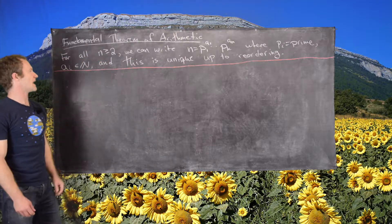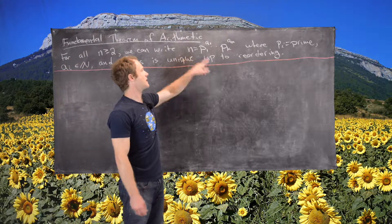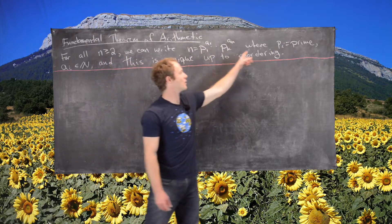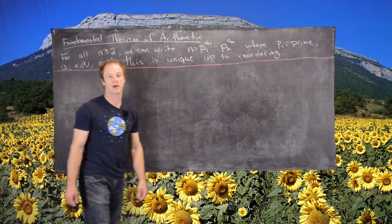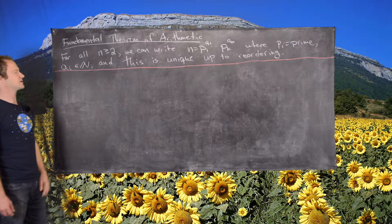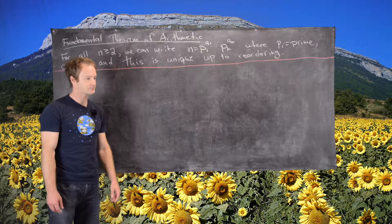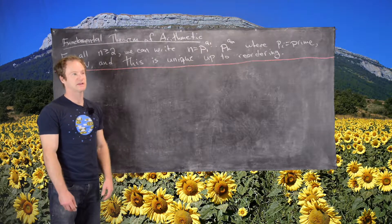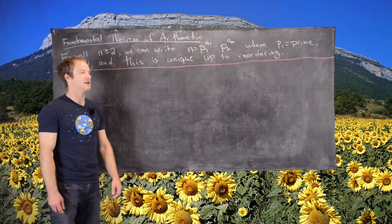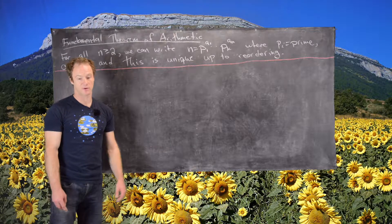It says: for all natural numbers bigger than or equal to 2, we can write this natural number as the product p1^a1 up to pk^ak, where the pi's are distinct primes, the ai's are natural numbers, and this product is unique up to reordering. For example, 6 can be written as 2 times 3 or 3 times 2, but we consider those as the same representation because it's just a simple reordering.